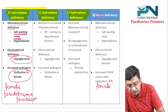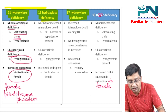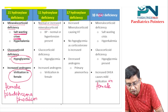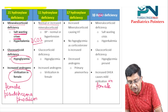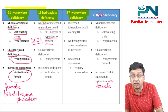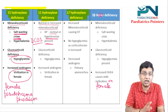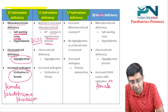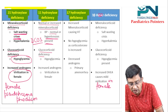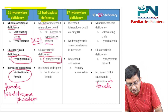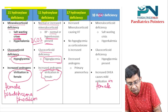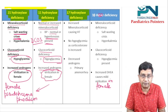In 11-hydroxylase deficiency, there is normal or increased level of mineralocorticoid reactivity, that is deoxycorticosterone. Because of this, either the blood pressure is normal or hypertension is present — no salt wasting crisis. There is glucocorticoid deficiency which can lead to hypoglycemia, and as in 21-hydroxylase, there are also increased androgens which can cause virilization in a female — female pseudohermaphroditism.